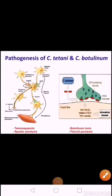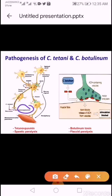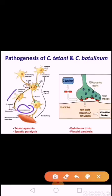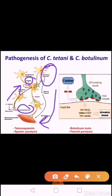Pathogenesis of Clostridium tetani: wound contamination by spores is followed by germination and multiplication, then release of the neurotoxin tetanospasmin. This is absorbed by nerve endings and reaches the central nervous system through retrograde axonal transport, where it fixes to ganglioside receptors. It inhibits the release of inhibitory neurotransmitters such as GABA and glycine. Alpha motor neurons are activated, excitatory impulses spread in the CNS, causing pronounced rigidity, unopposed muscle contraction, and spasm — resulting in spastic paralysis.